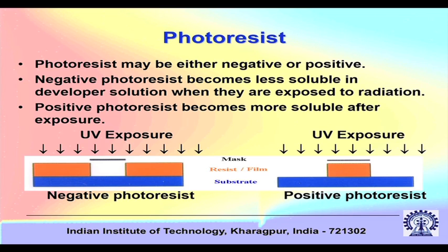On the SiO₂ layer, we coat with a photoresist — that is the next level of coating — before shining the system with a light source masked by the mask. The photoresist is deposited by a process called spin coating, using a device called a spin coater which deposits a thin film of photoresist on the substrate. The photoresist may be either positive or negative. Negative photoresist becomes less soluble in the developer solution when exposed to radiation.